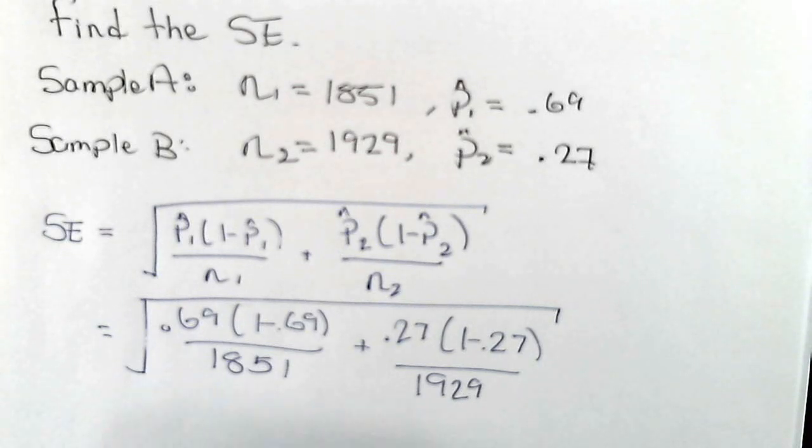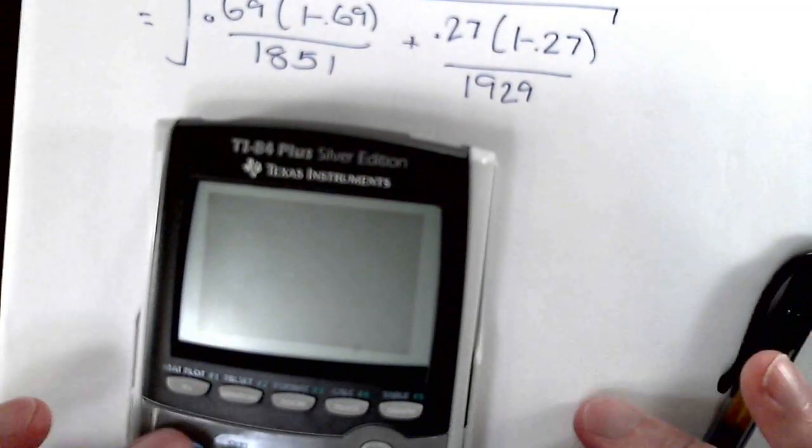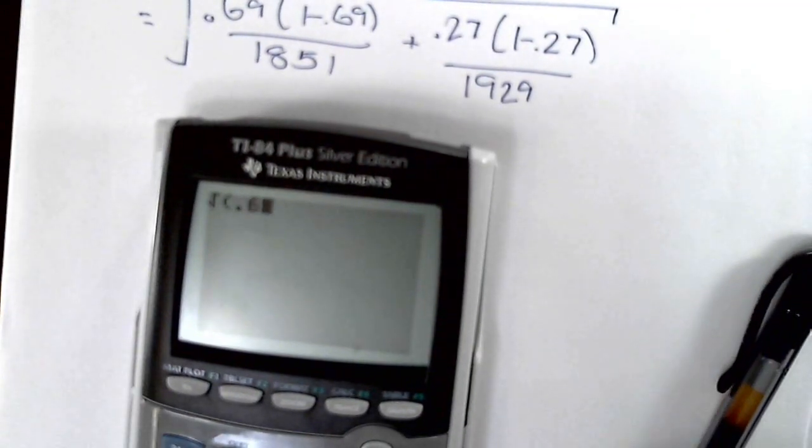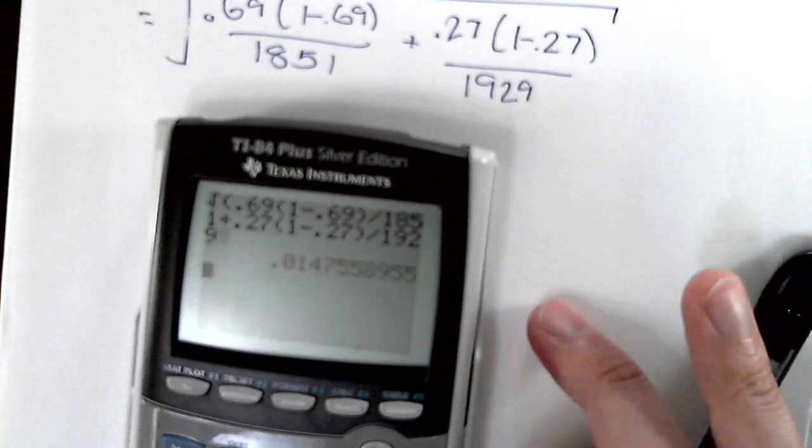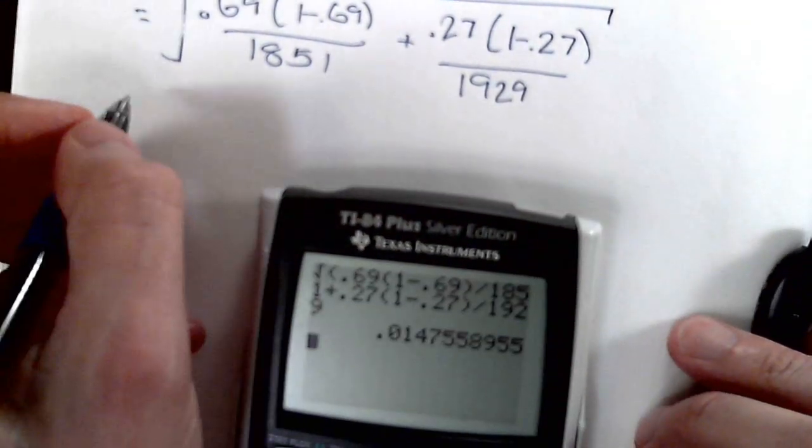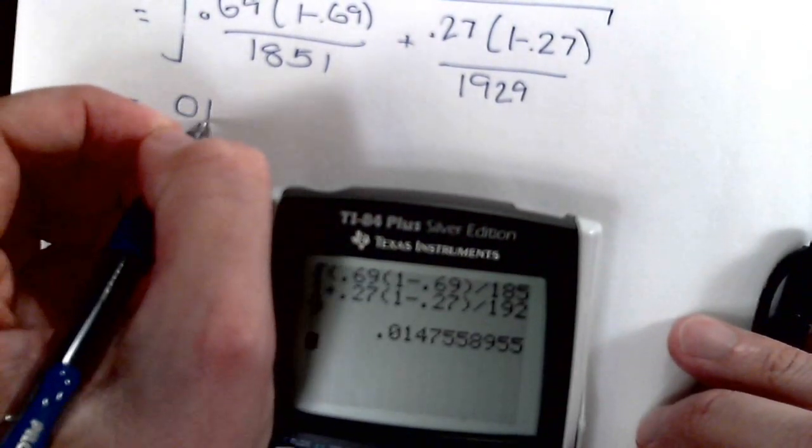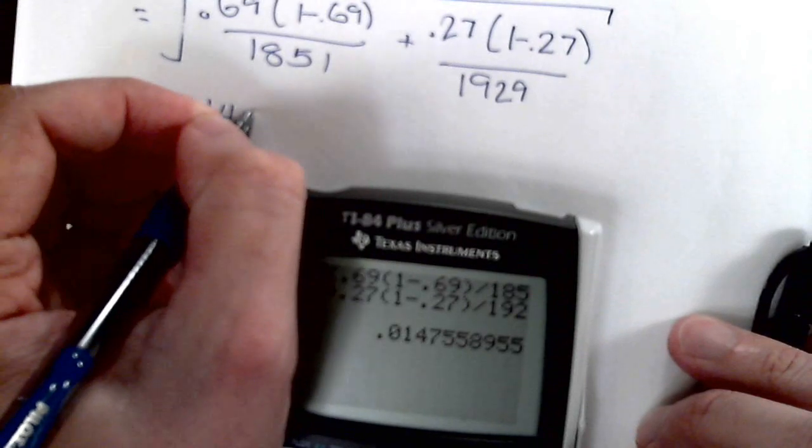I'll type this in the calculator. The square root of 0.69 times 1 minus 0.69 divided by a sample size of 1,851, plus 0.27 times 1 minus 0.27 divided by 1,929. So the standard error for this problem is 0.0148.